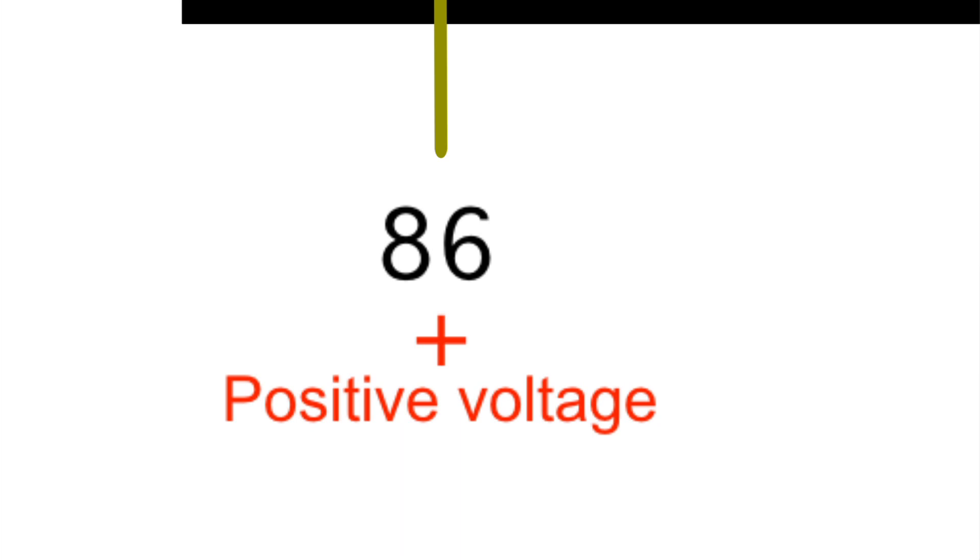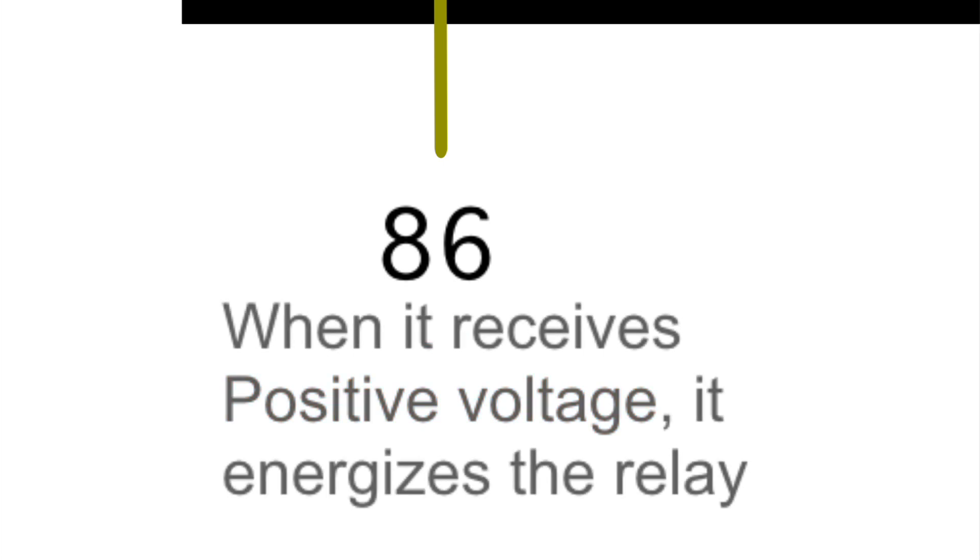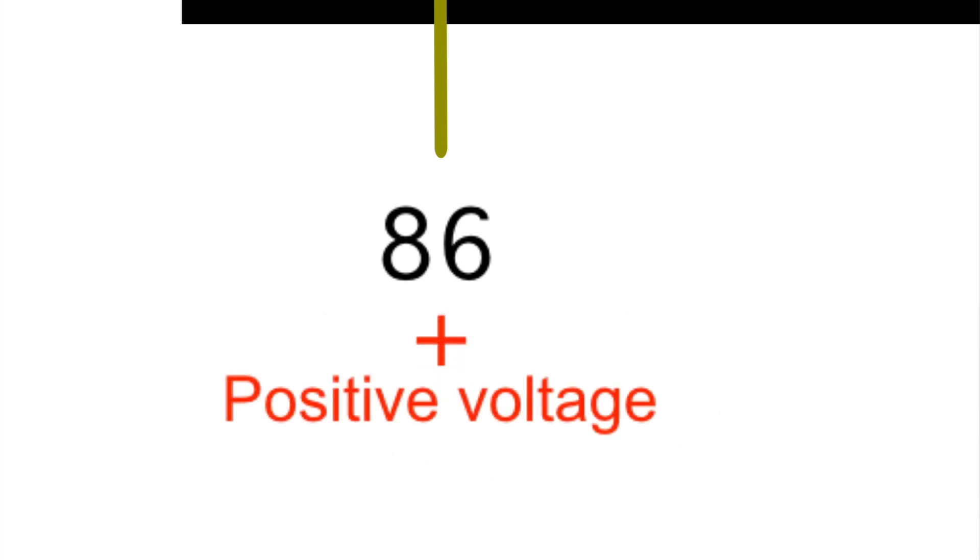The 86 is the positive and that's our signal. The 86 pin is like our switch. When it receives this positive voltage, the relay will energize and activate to power up or complete the circuit on a high amperage outlet.